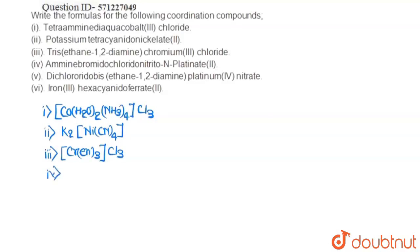Fourth one says amine, bromido, chlorido, nitrito-N, platinate. So, if we note down the formula, then this will be platinum. Firstly, bromine is written, then chlorine is written, then amine is written, then NO2 is written with a minus 1 charge to make platinate(2).